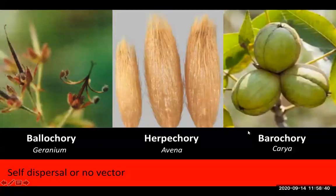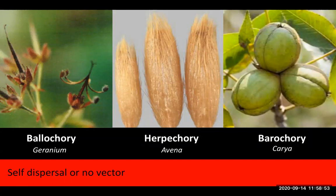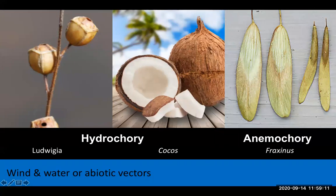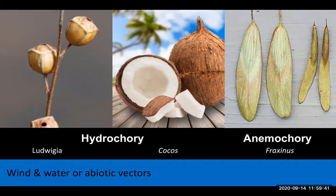Some examples of self-dispersal: we have geranium, which throws its seeds through ballochory. We have Avena, where the seeds crawl along the ground by absorbing and desiccating with moisture. And then we have Carya, which basically drops these big nuts onto the ground and they roll — so gravity disperses the plant with barochory. Then we have hydrochory, which can be accomplished with either big hollow fruit that can float along the water, or smaller boxes called rattle boxes. Then we have wind dispersal, which typically occurs with wings or some feathery filament that allows the seed to float on air. We'll see that different qualities of these fruits correspond with their dispersal style.